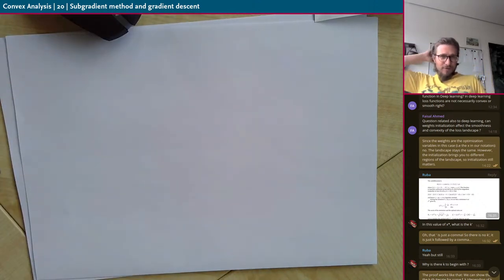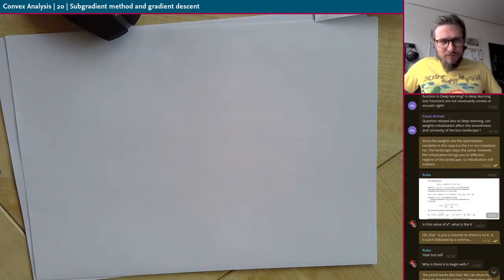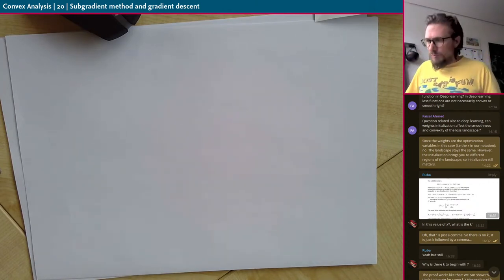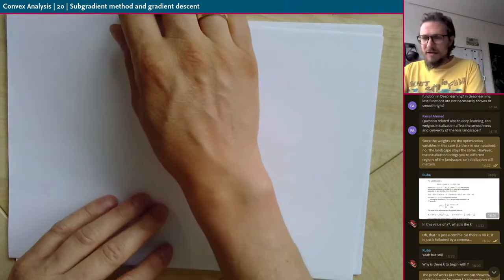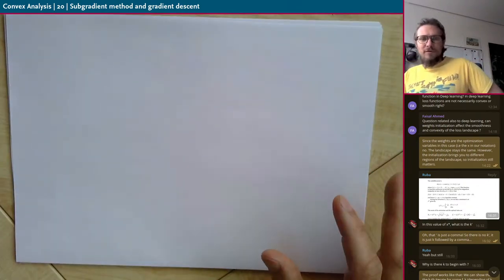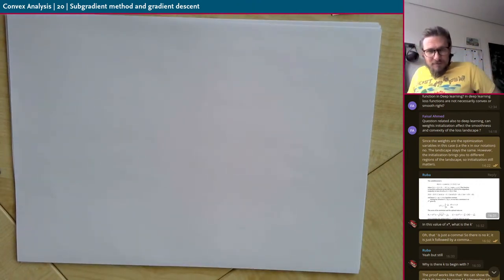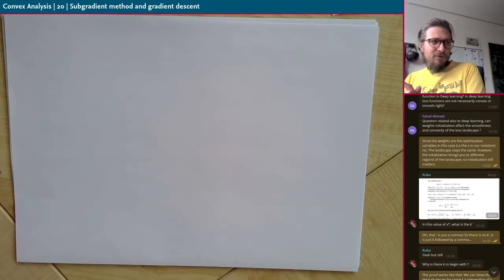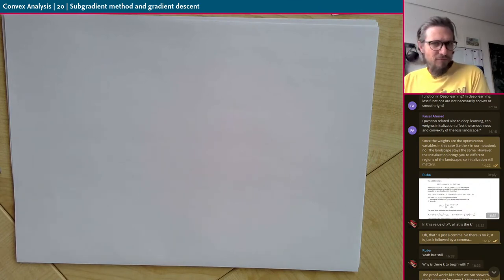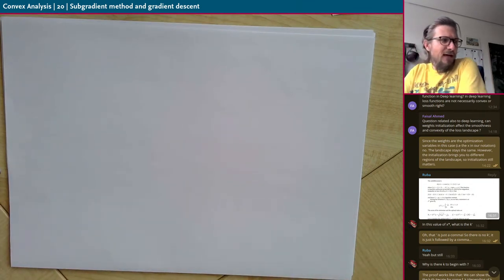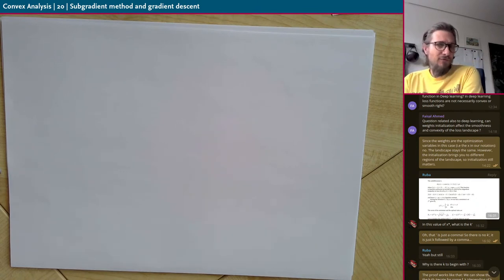Welcome everybody to lecture number 20. We finished yesterday our worst-case analysis of convex optimization in all three settings: convex and Lipschitz continuous, convex and L-smooth, and finally mu-strongly convex and L-smooth. We saw that we have different lower bounds which cannot be beaten in every case by any algorithm which is only first order.